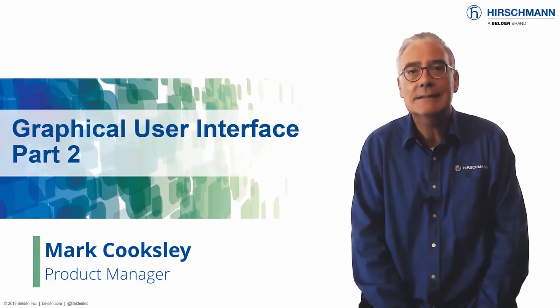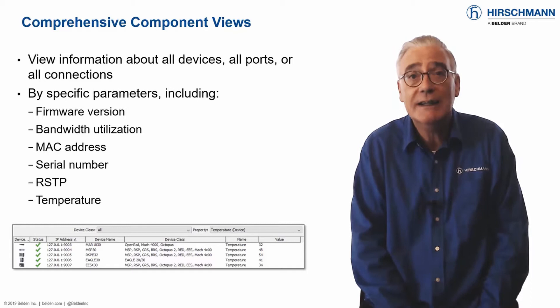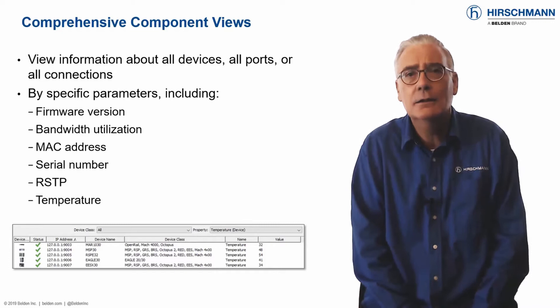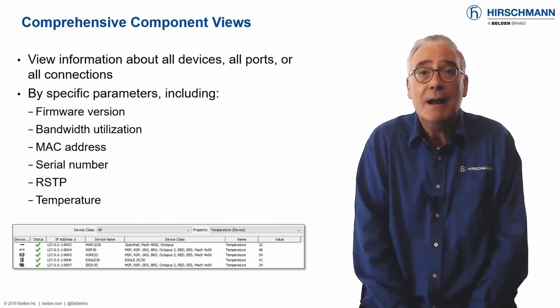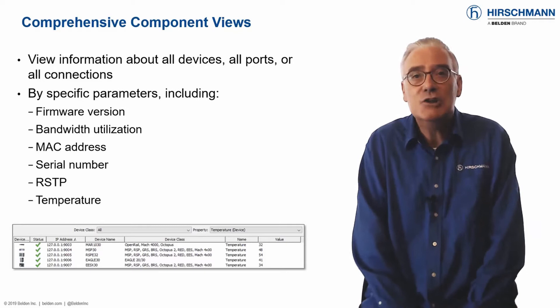Now let's take a look at some more useful functionality inside the graphical user interface. For general supervision, a good topology map will meet your requirements. But there will be times when you need more specific information, and typically you'll need it quickly. The properties section of Industrial HiVision provides you with information about specific properties of devices, connections or ports, in real time, across the complete network.